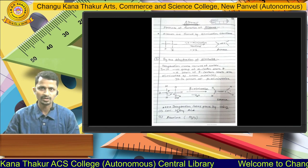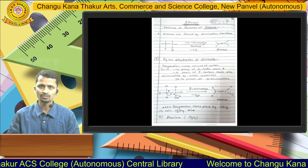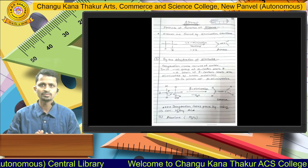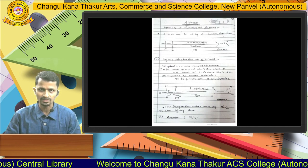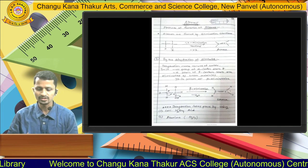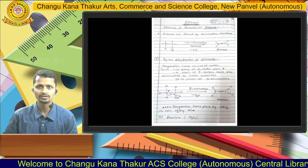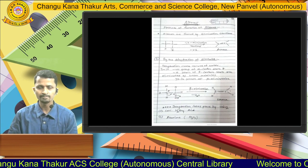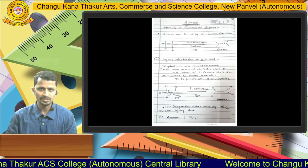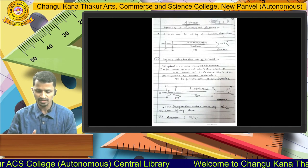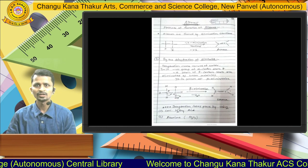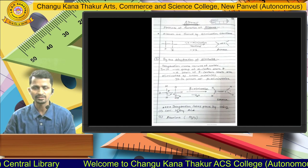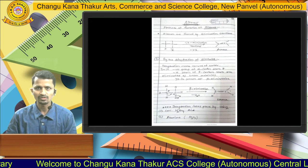The first important and well-known method for the formation of alkenes is the dehydration of alcohols. Dehydration means loss of water. From the alcohol, the loss of OH group and H group takes place in the form of water, and we get the alkene as our final product. The dehydration of alcohol takes place using two reagents: concentrated sulfuric acid and alumina (aluminum oxide).